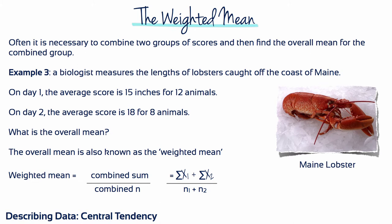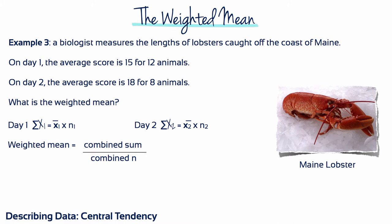This overall mean is not halfway between the two original sample means. Because the samples are not the same size, one makes a larger contribution to the total group and therefore carries more weight in determining the overall mean. For this reason, the overall mean is called the weighted mean. To calculate the weighted mean, we need two values: the combined sum of scores, sigma x1 plus sigma x2, and secondly, the total number of scores in the combined group, n1 plus n2.